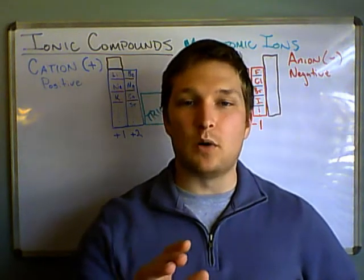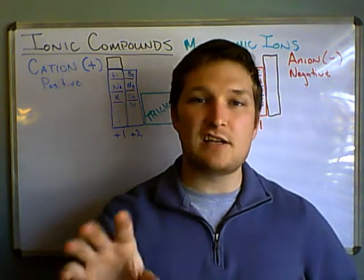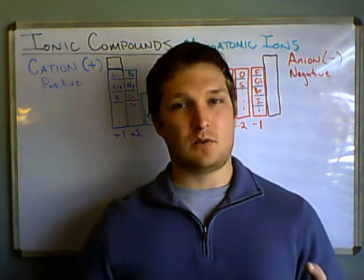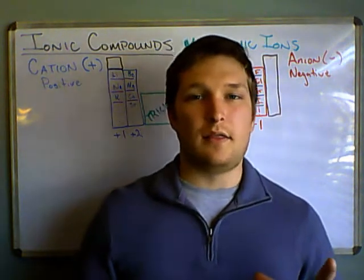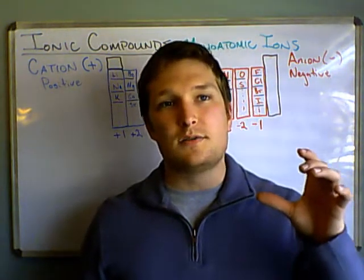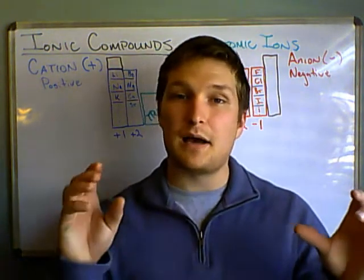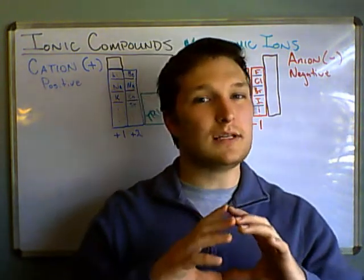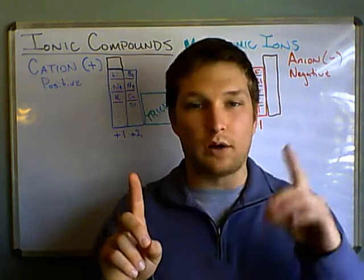Ionic compounds will do whatever they need to to get the net charge to be zero. That's where they like to be. So like sodium chloride, the cation was plus one, the anion was minus one. And when they came together, the net charge was zero. That's a really easy one to deal with because it's just one and one.